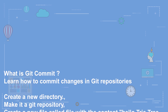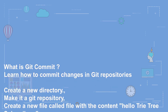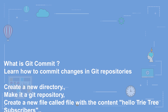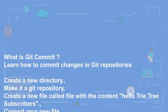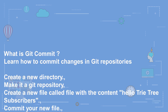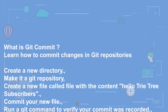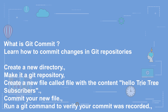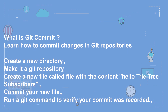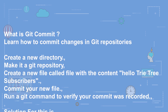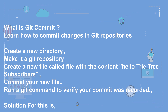What is git commit? Learn how to commit changes in git repositories. Create a new directory, make it a git repository, create a new file called 'file' with the content 'hello', and commit your new file.